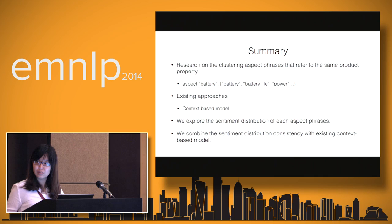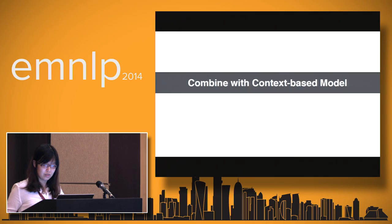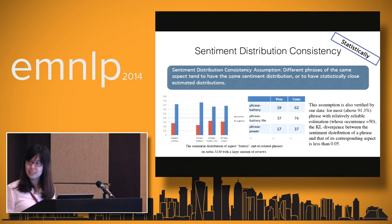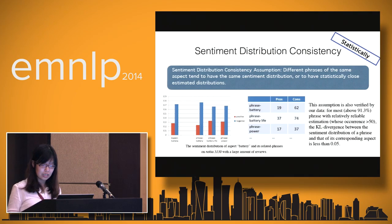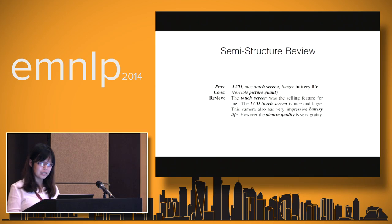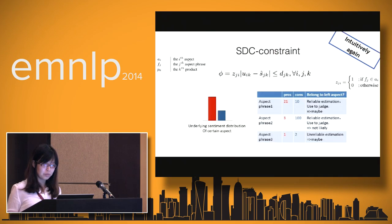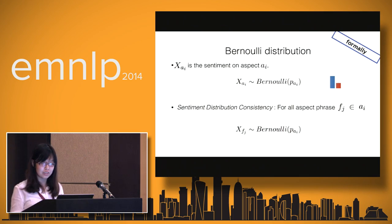Q: You are considering only two possible sentiment values — positive and negative. How useful would it be to consider neutral sentiment, and how much are you missing by not considering it? A: We are considering only negative and positive sentiment here because our dataset is structured this way with semi-structured reviews. If we got five-star reviews or neutral sentiment reviews, we can extend our model from the Bernoulli distribution to a multinomial distribution. I think it can be naturally extended to that, and I think it will also work as well.